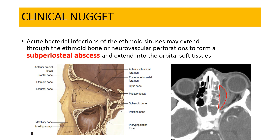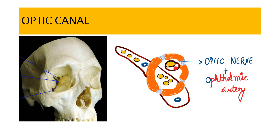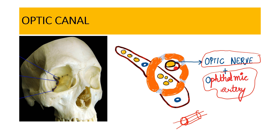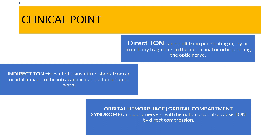The fourth opening is the optic canal. It is called a canal rather than a foramen because it is not just a simple opening but an extended passage through which the optic nerve travels. The structures passing through the optic canal are the optic nerve and the ophthalmic artery. The optic canal is a very tight structure, so forces from trauma to the eyeball are transmitted to this area.